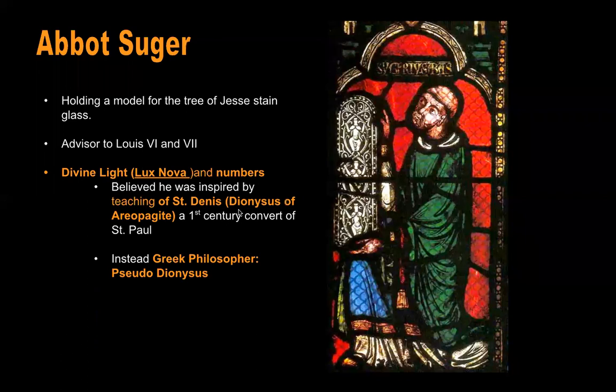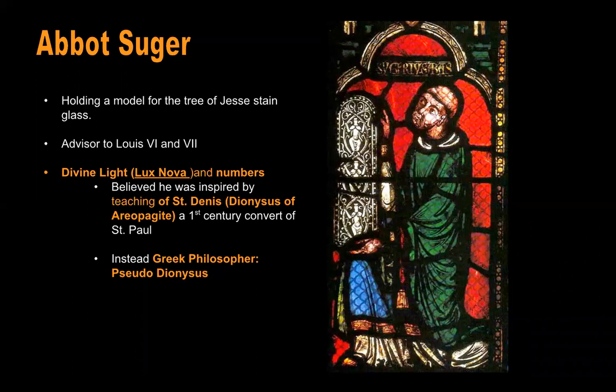This is Abbot Suger, the patron of the very first Gothic church, Saint-Denis. He was studying who he thought was Saint Denis, but he was actually studying the Pseudo-Dionysius, a Greek philosopher. In studying this philosopher, he emphasized numerical harmony and the concept of divine light — we call it lux nova. The foundation of stained glass is really rooted in that.